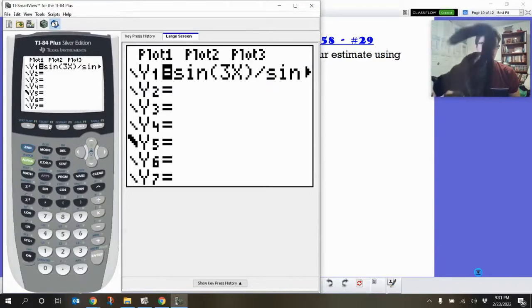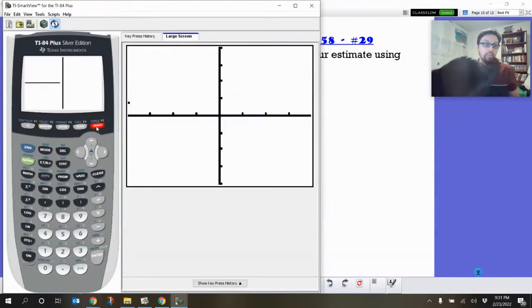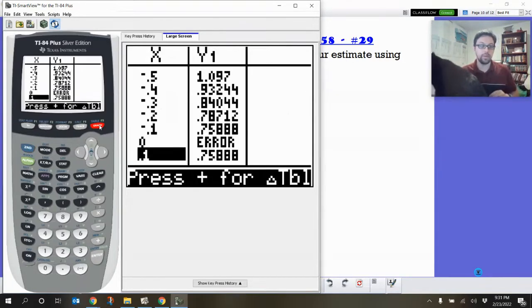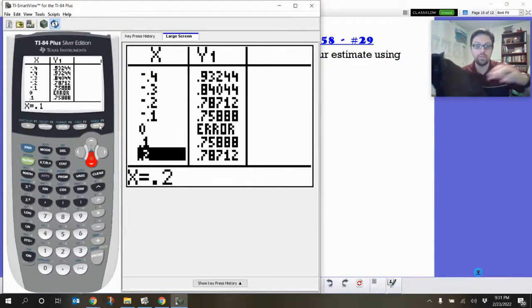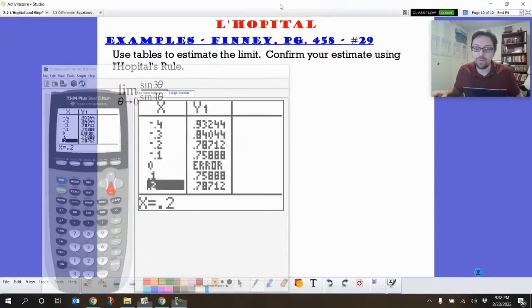The way I set my table is I'm starting at 0.5 and I'm going by 0.1s in my table. Oh, no, no, no. Second table. There we go. So if I look at my table, I can see that as we get close to 0, there's an error at 0. That's kind of why we've got L'Hopital's rule. And we get 0.7588. So somewhere around 0.75 is, I think, what we're supposed to get.